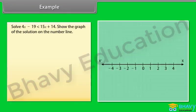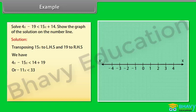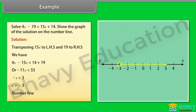Example: Solve 4x minus 19 less than 15x plus 14. Show the graph of the solution on the number line. Solution: Transposing 15x to LHS and 19 to RHS, we have 4x minus 15x is less than 14 plus 19, or minus 11x is less than 33, so minus x is less than 3, giving x is greater than minus 3. This inequality is shown on a number line. We draw an open circle because x is not equal to minus 3, and an arrow to the right because we want values greater than minus 3.